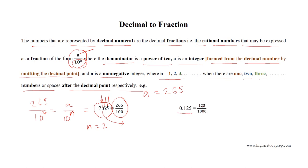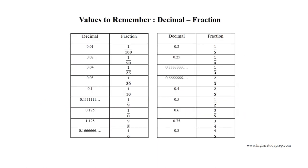For example, for the decimal number 2.65, n equals 2 because there are two digits after the decimal point, and a equals 265, so 2.65 equals 265 over 10 squared, where 10 squared equals 100. Similarly, 0.125 equals 125 over 1000. Since 125 over 1000 equals 125 over 125 times 8, the equivalent fraction for 125 over 1000 equals 1 over 8. Here are such values to remember: 0.125 equals 1 over 8, 0.4 equals 2 over 5, 0.75 equals 3 over 4, and so on.